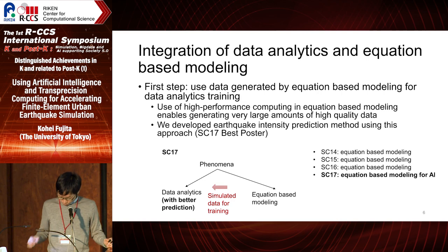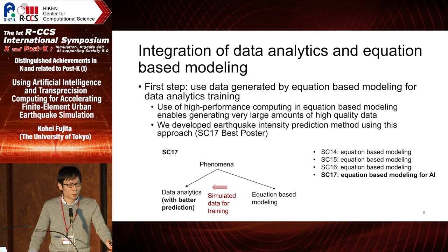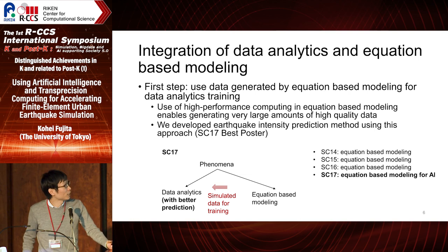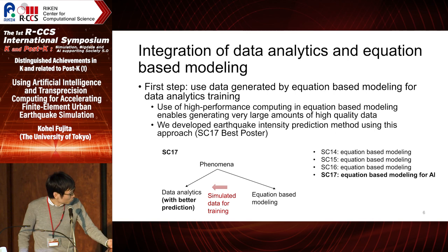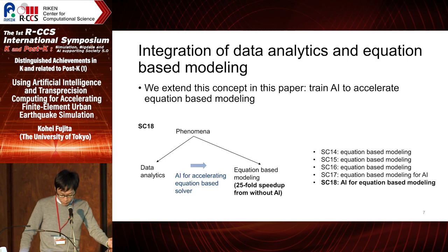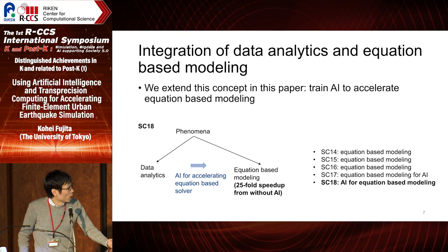As a first step, we used high-performance computing equation-based modeling to generate high-quality data and used that for training AI, such that we can get better AI with better prediction. We developed this type of approach for earthquake intensity prediction in SC17 and received best poster for that. In SC18, we extend this concept and train AI to accelerate equation-based modeling.